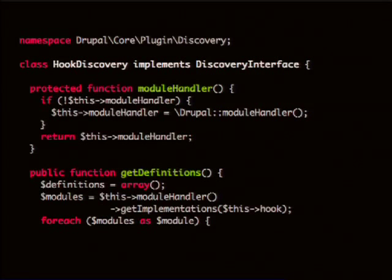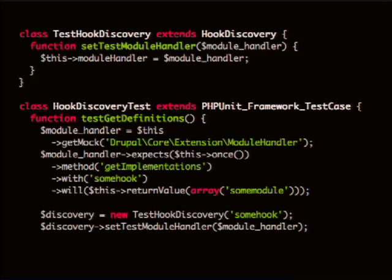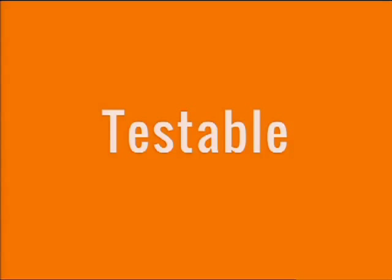Another example: you could hide that call to Drupal::moduleHandler() in a local method. Basically it's the same thing, except in get_definitions, instead of calling out to the Drupal class, it's talking to itself. And then in the module_handler method, it'll only call out to Drupal::moduleHandler() if the local variable is not set. One way to test this is in your test, subclass that class and add a setter. If you want to make it really explicit, on your normal class you can say set_test_module_handler(), which is very explicit that you'd only use that during a test. Then you just call the setter and your test works — that is totally testable.